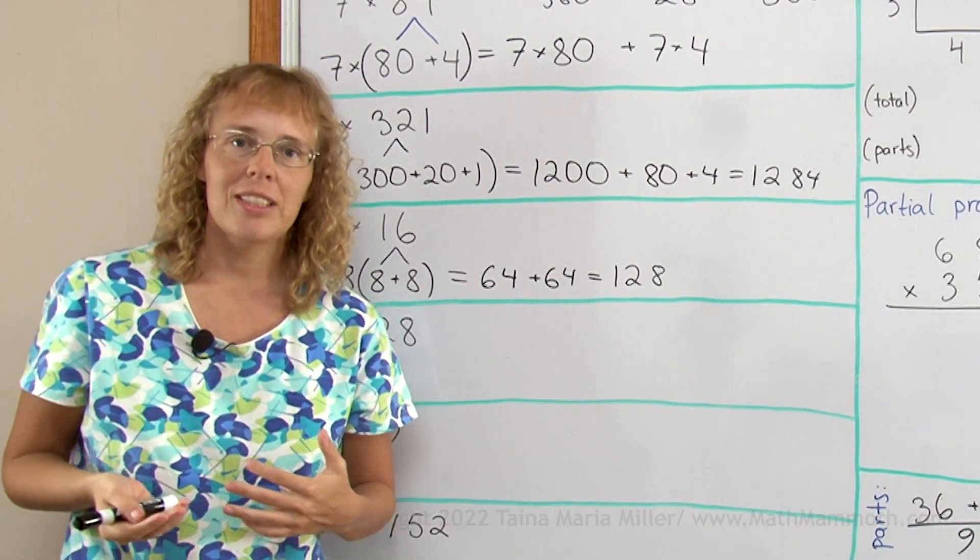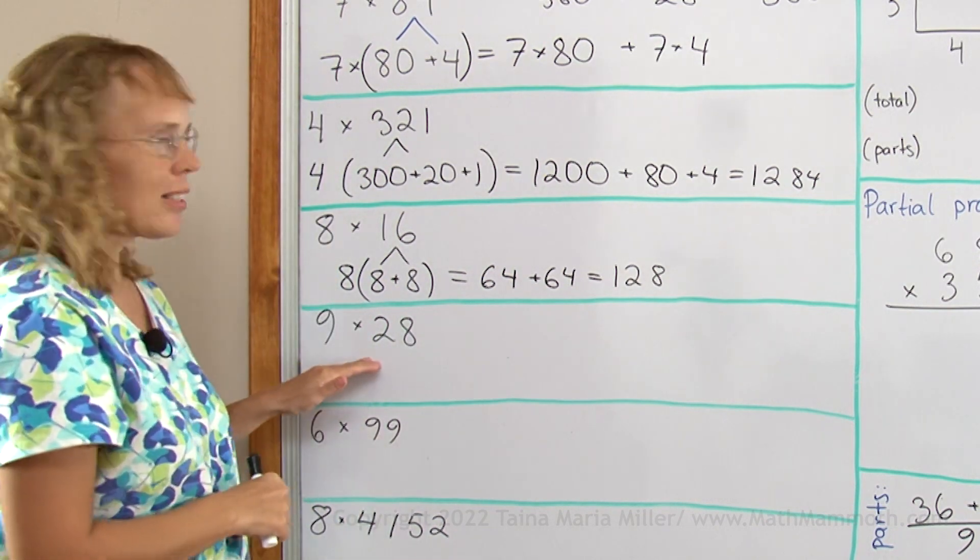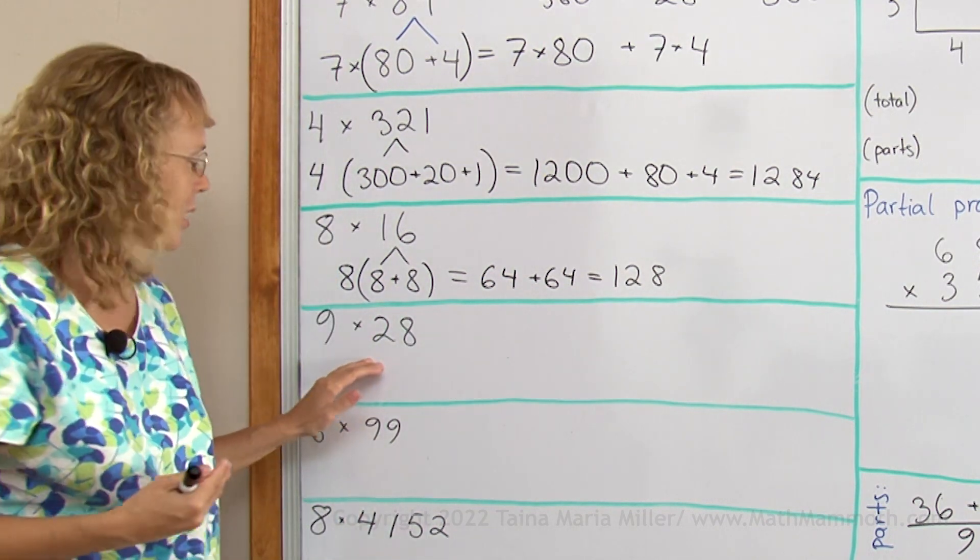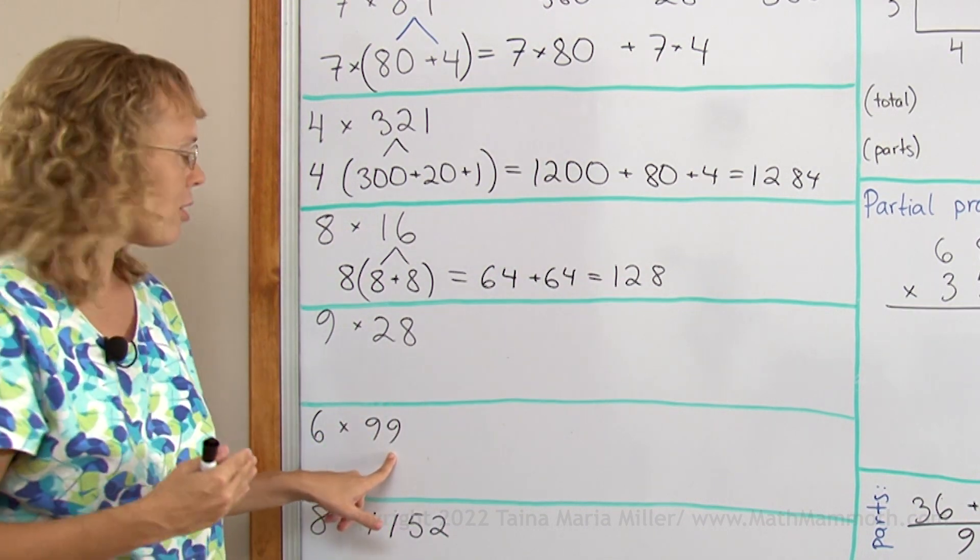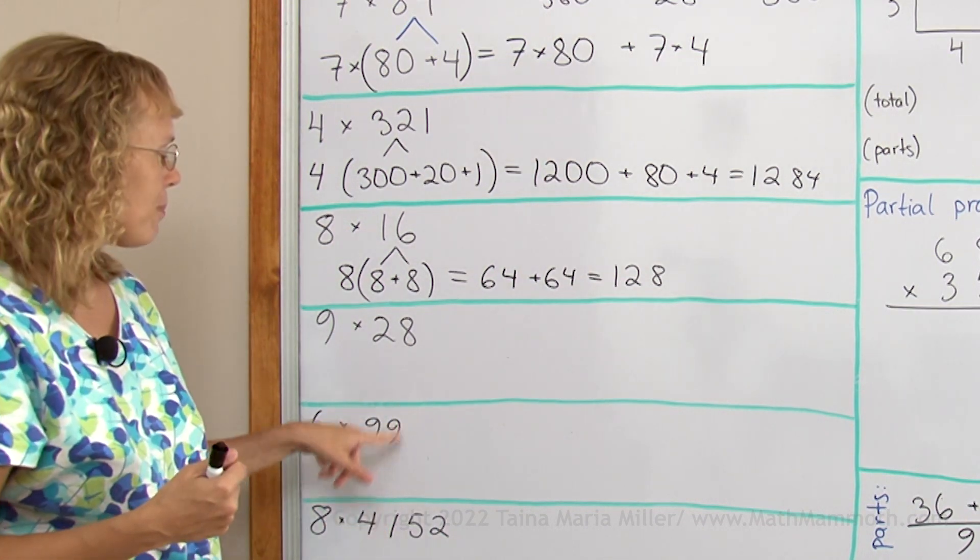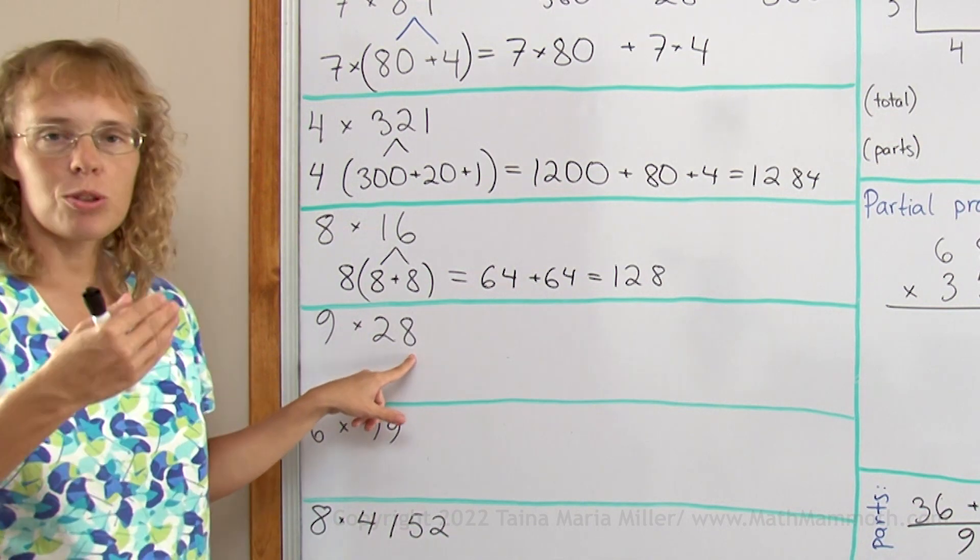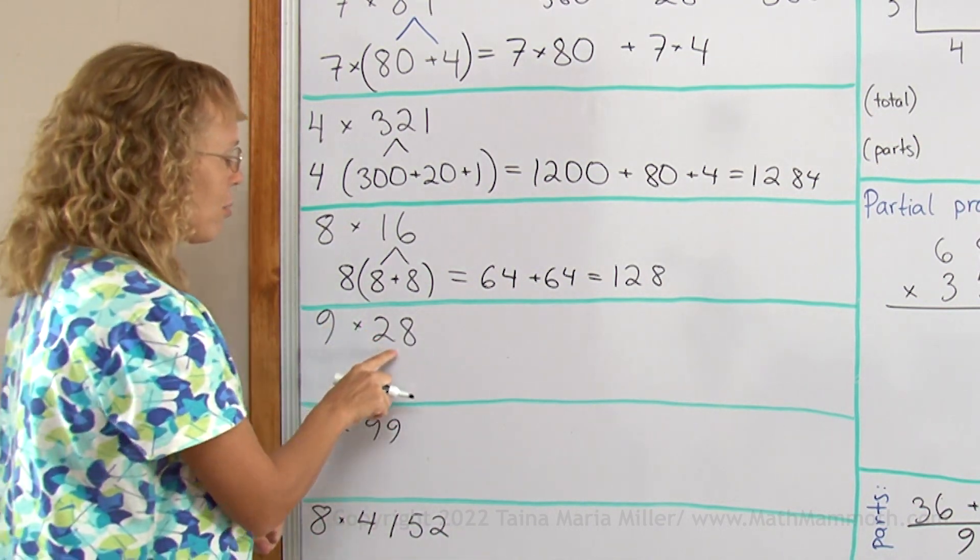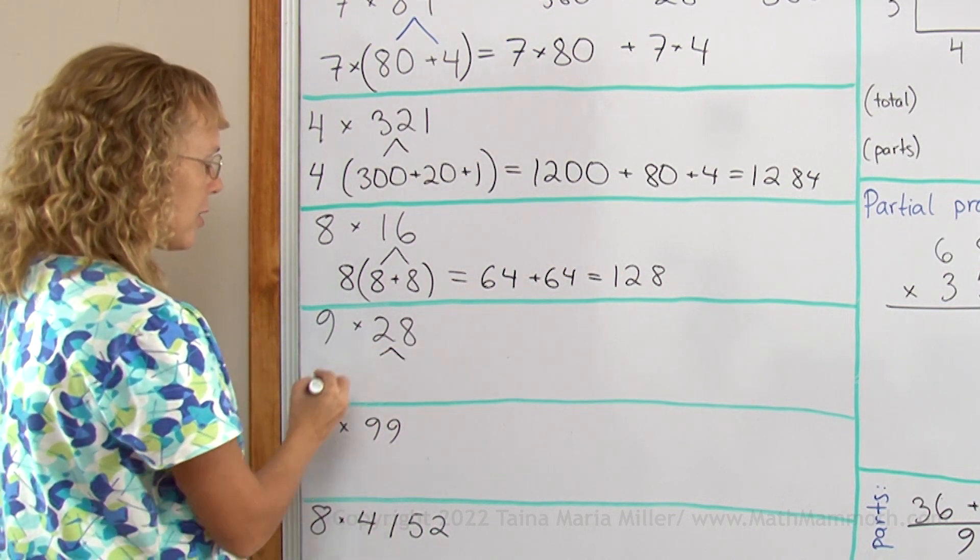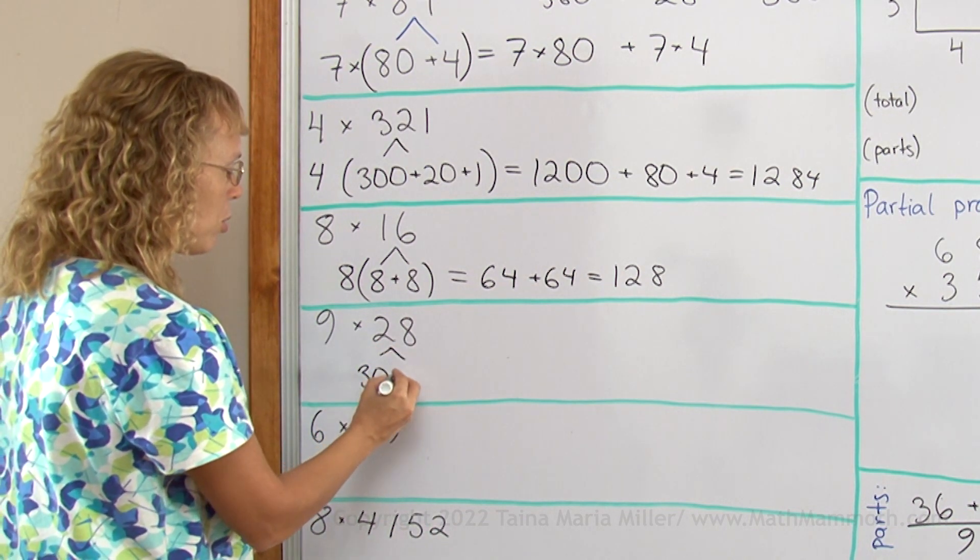Sometimes you can use this idea to mentally solve multiplication problems where the other number is very close to 100 or a whole 10 or a whole thousand. Like here, 28 is very close to 30. 99 is very close to 100. I will actually write 28 as a subtraction. It is 30 minus 2, right?